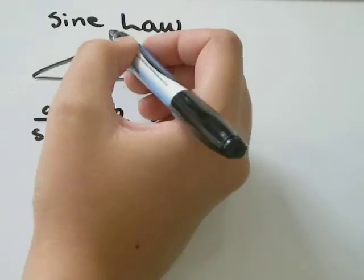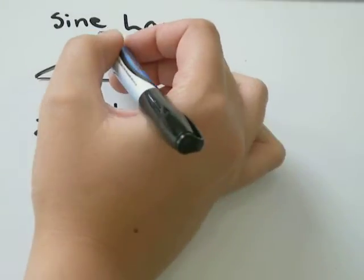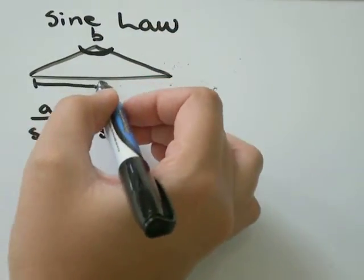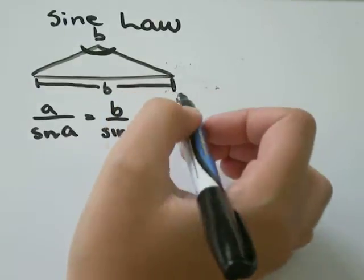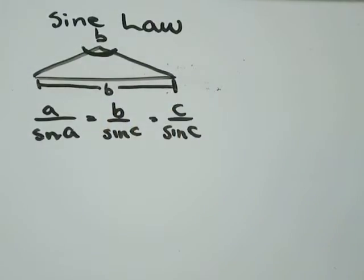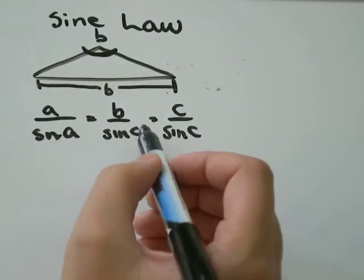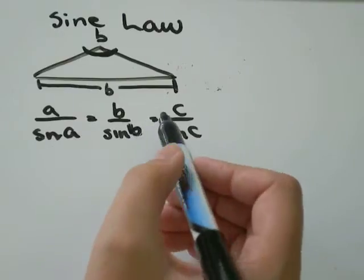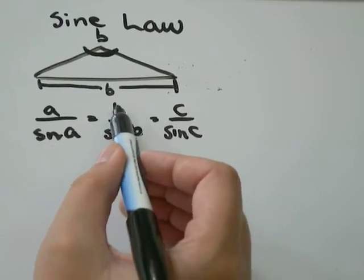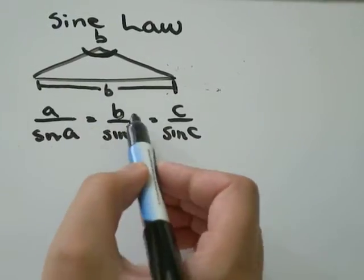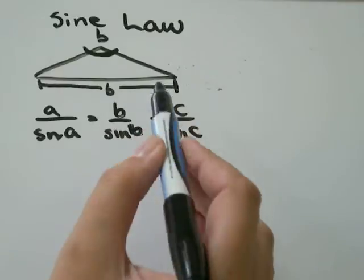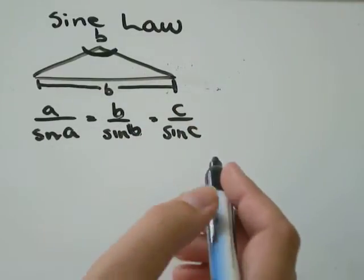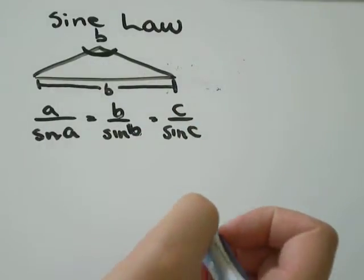So this is angle B, and the length right here — that will be the length of B. We would use B, the length over sine of the angle, to figure out the relation. So we've got the example.